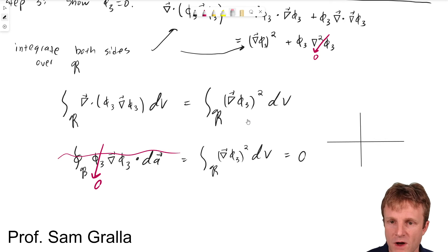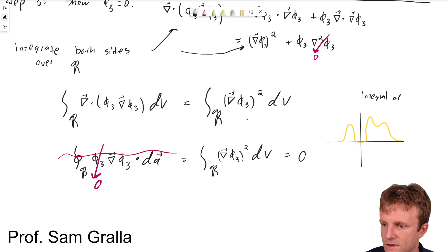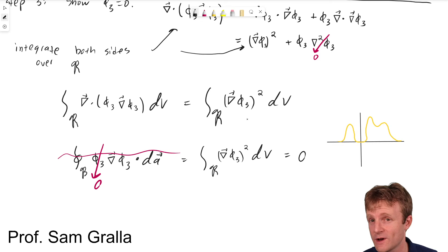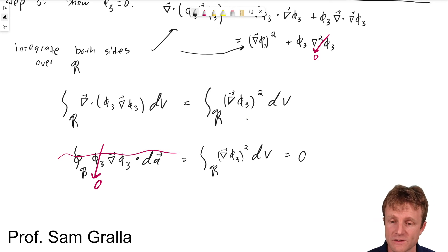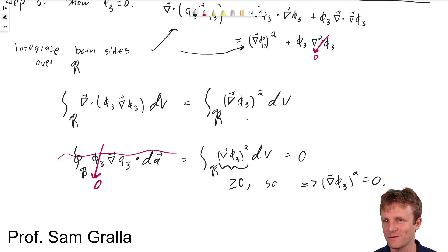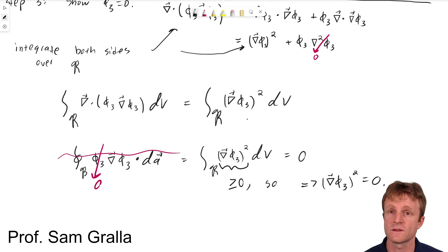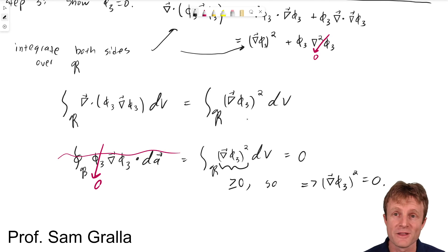If the function were positive or zero everywhere and its integral were zero, then it would have to be zero. The key point is: if you have a function known to be greater than or equal to zero, and its integral is equal to zero, then the function itself must be zero. The integrand grad phi 3 squared is greater than or equal to zero, so the fact that its integral is zero actually implies that grad phi 3 squared equals zero.